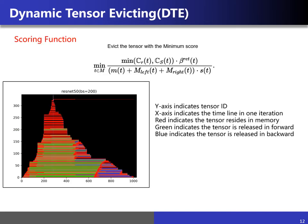We use the heuristic strategy to dynamically score the tensors to be evicted and minimize the scoring function. In the heuristic function, we consider the optimization of memory fragmentation. As shown in the figure, by the DTE strategy, we can see the state and lifetime of each tensor in memory in one iteration. The y-axis indicates the tensor ID, the x-axis indicates the timeline in one iteration. Red indicates the tensor resides in memory, green indicates the tensor is released in forward, and blue indicates the tensor is released in backward.